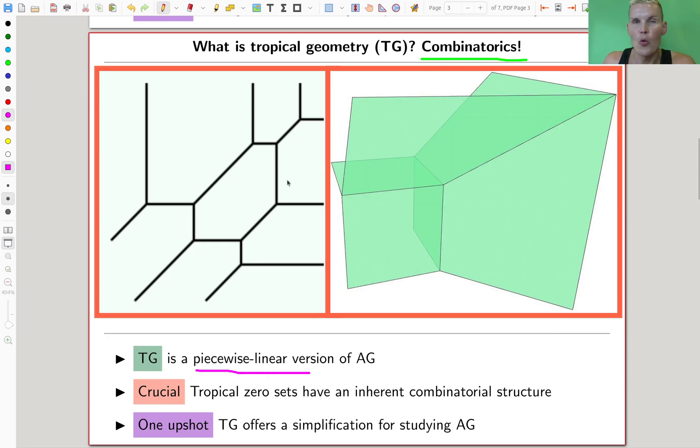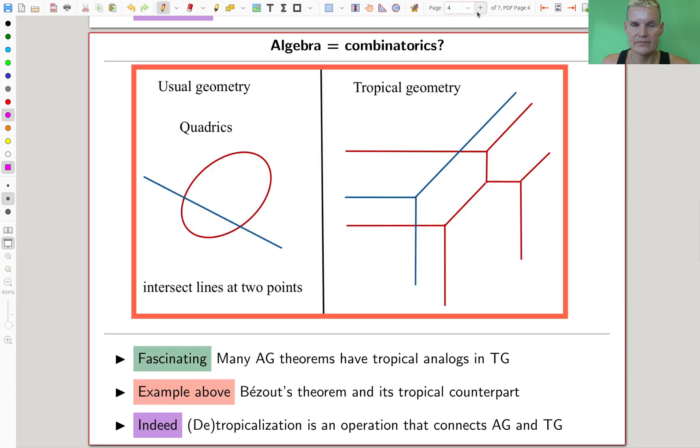So tropical geometry is this combinatorial version. And the question, how much in parallel do they actually run? Non-trivial at all, but there's a lot of intersection, which makes this whole thing tick. The fascinating thing is one of them is combinatorics and one of them is algebraic. They still have so much in common that essentially there's an algebraic geometry theorem and there's a tropical analog. And there's a tropical geometry theorem and there's an algebraic geometry analog. You can play from one side to the other.